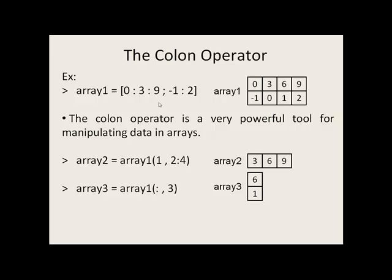The colon operator is a very powerful tool for manipulating data in arrays. If we want, for example, the data in the first row and in columns 2 through 4, that's 3, 6, and 9, we can say 1, 2 colon 4. If we want everything in the third column, 6 and 1, we can say colon 3.